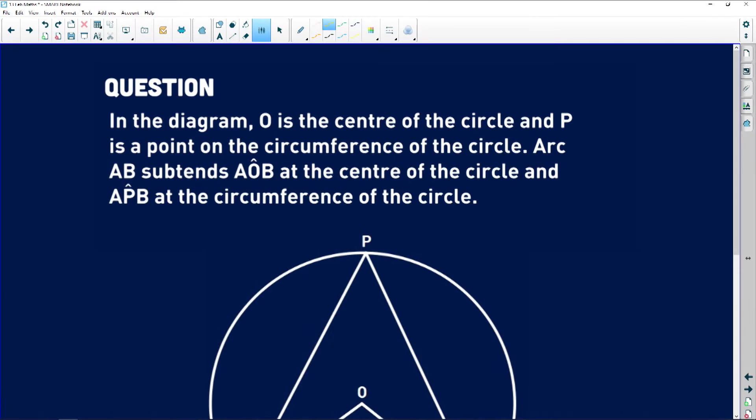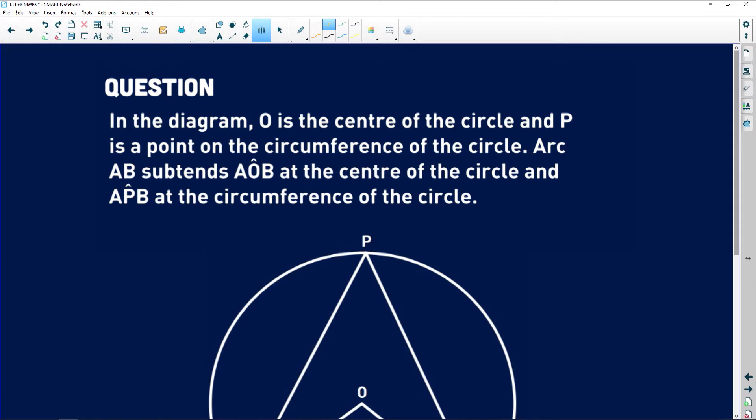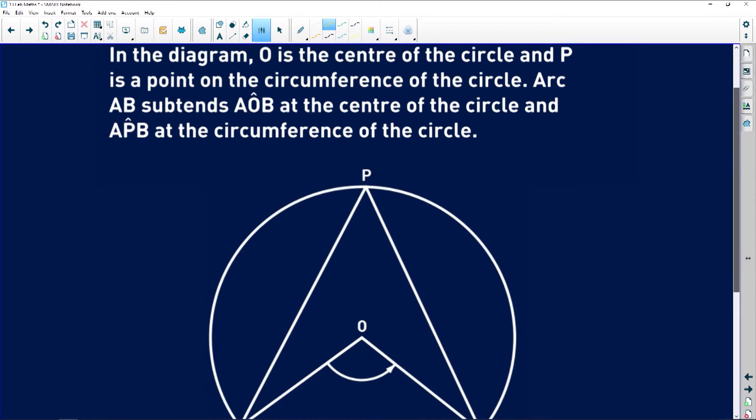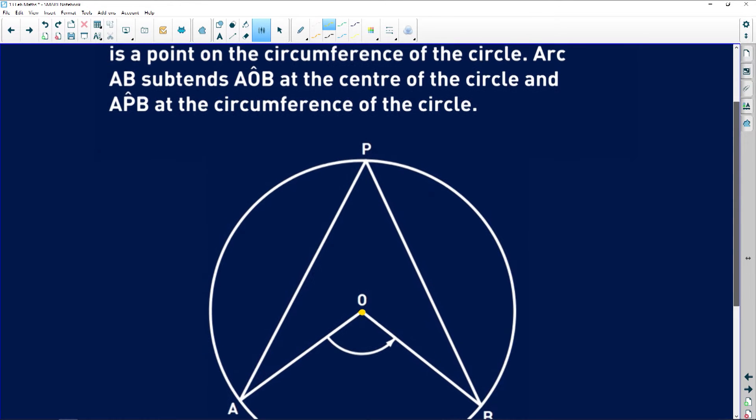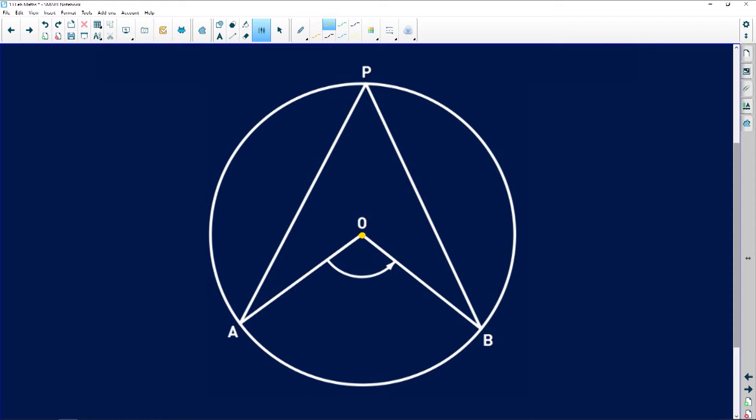So let's take a look. It says in the diagram O is the center of the circle and P is a point on the circumference of the circle. O is the center, very important. The center dictates a lot of things in your circle. Arc AB, that's this thing over here, it's basically saying that there is a part of the circumference joined by A and B.